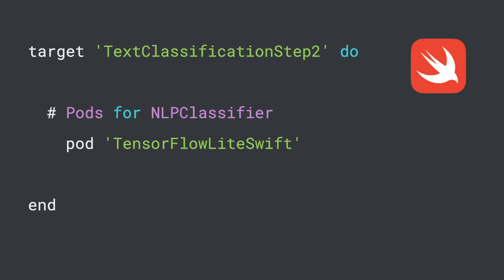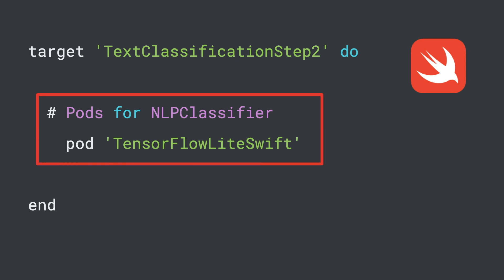In iOS, you use CocoaPods to specify external files to use. These are specified in a pod file, such as this one. Google provides a pod for TensorFlow Lite called TensorFlow Lite Swift that you can use to bring in the TensorFlow Lite libraries, giving you an interface to use models directly in your iOS apps.